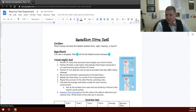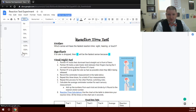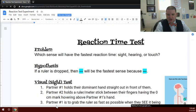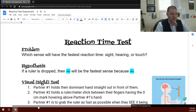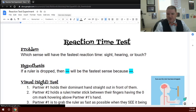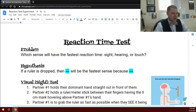Let me blow this up a little bit so you can see it a little bit nicer. Now you should be able to see everything on there. Since it's an experiment, we've got all of our stuff listed out there. We've got our problem, which sense will have the fastest reaction time: sight, hearing, or touch. So our hypothesis then is if a ruler is dropped, then pick which sense is going to be the fastest because, and then give a reason why you think that sense will be the fastest.